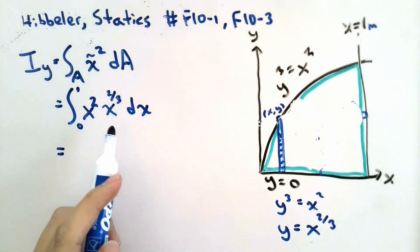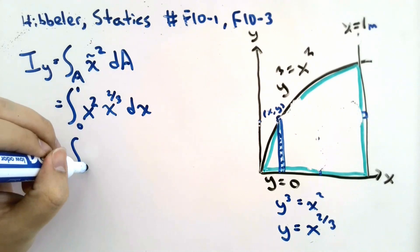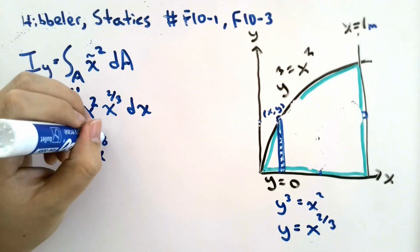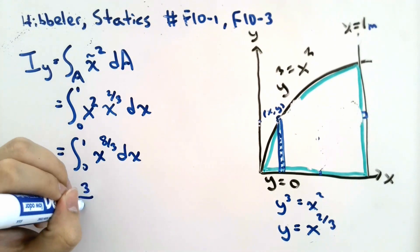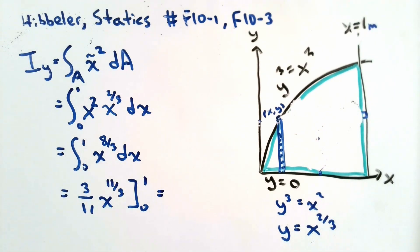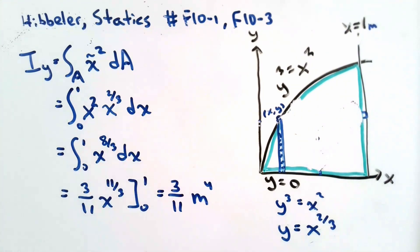And if we multiply x squared times x to the power of 2 thirds, we will get x to the power of 2 plus 2 thirds. Now this integral is actually very easy to solve. This gives us a moment of inertia about the y-axis of 3 elevenths meters to the power of 4. So that's how you find the moment of inertia by the x and the y-axis.